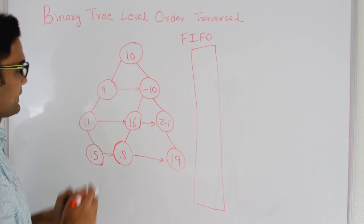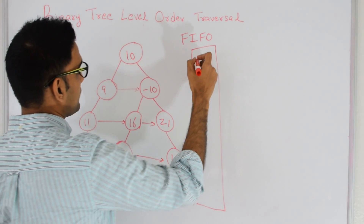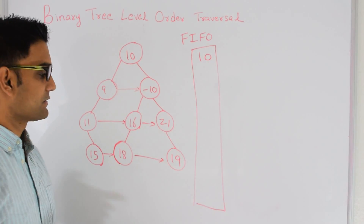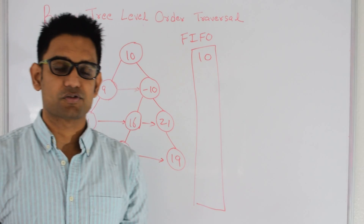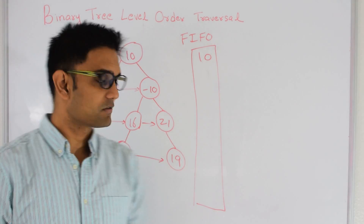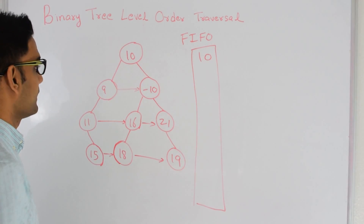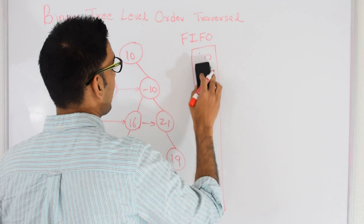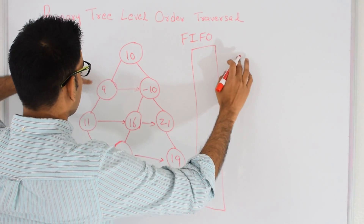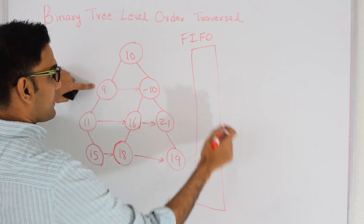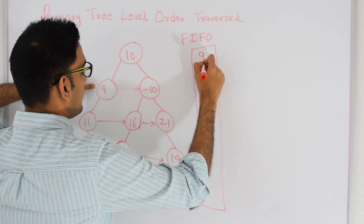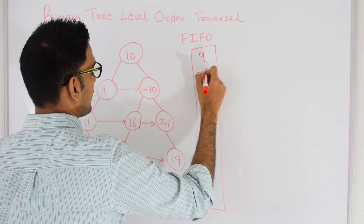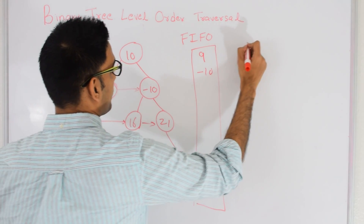The way it starts is I put the root into the queue, and then while the queue is not empty, I keep repeating the same process. So I take 10 out of the queue, I see if 10 has a left — it does, so I put that into the queue — and then I see if 10 has a right — it does, so I put that into the queue — and then I print 10.